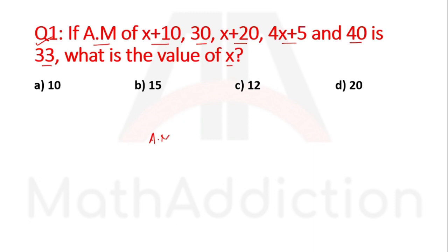For arithmetic mean, the formula is summation of x divided by n. The value of x bar is given as 33. For summation x, first we add the x terms: 4x plus x plus x equals 6x, then add the constant numbers.